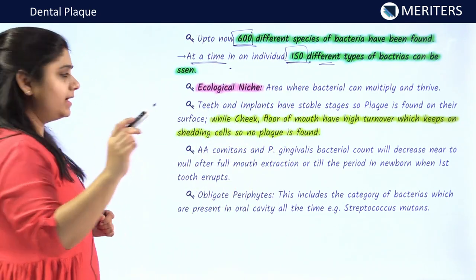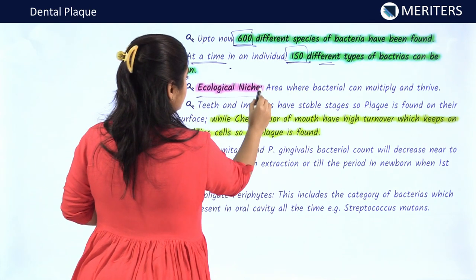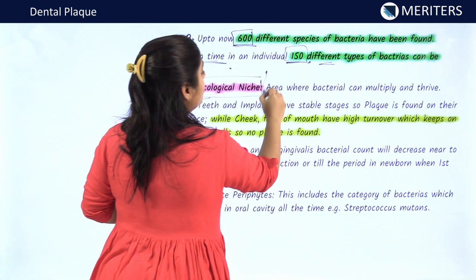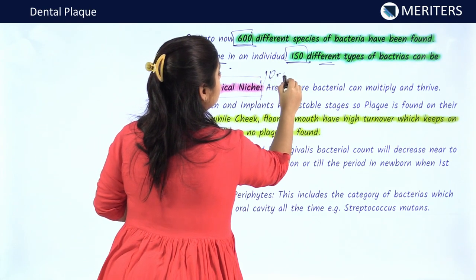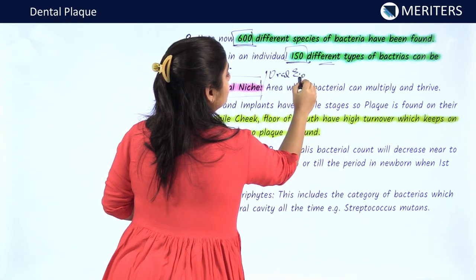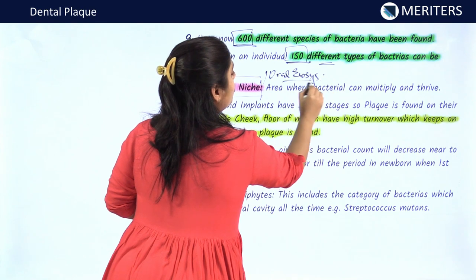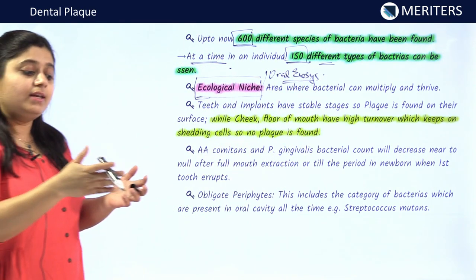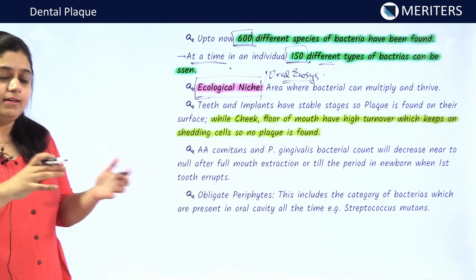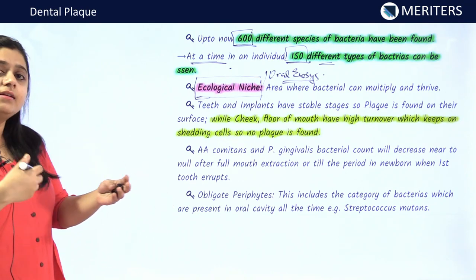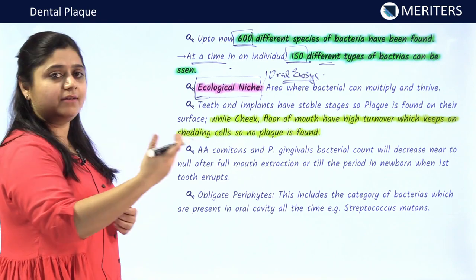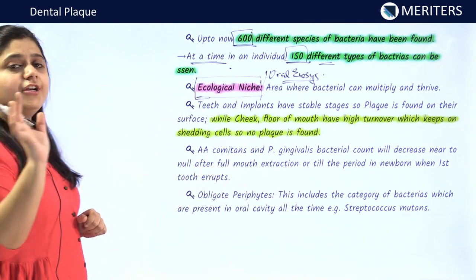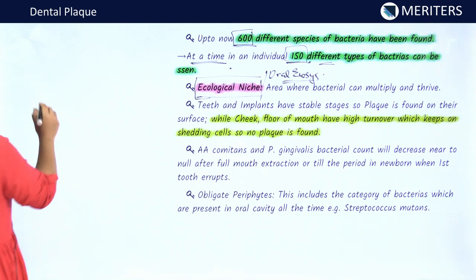Let us study something about ecological niche. An ecological niche is also known as the oral ecosystem. An ecosystem is an environment in which living and non-living things live in compatibility — in a mutually beneficial relationship. There are five different oral ecosystems in the oral cavity.